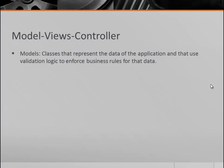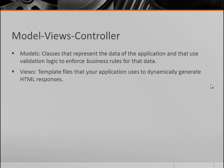More tangibly speaking, models are the classes that represent the data and the business rules of the application you're building. There is also logic validation inside the model. The views are the actual web pages and they are dynamically generated. We're also going to be talking about the new Razor view engine that is used in MVC4.